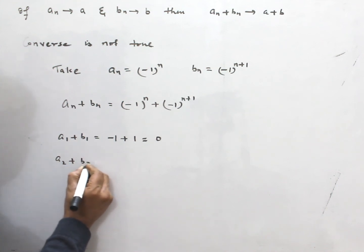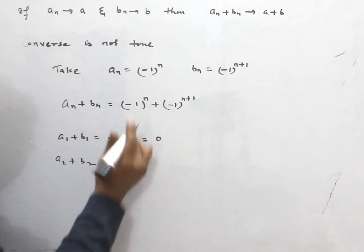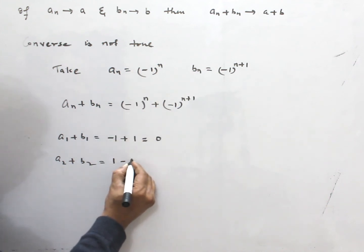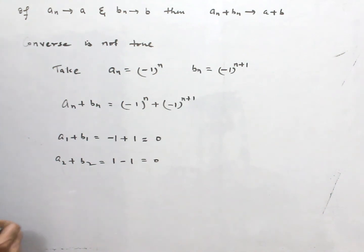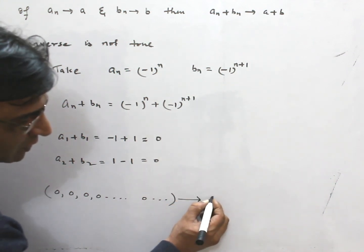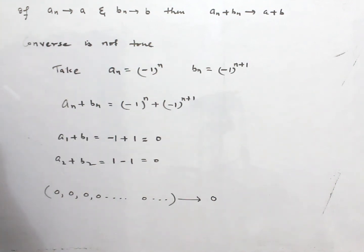Similarly, A2 + B2, again, if I take, this is 1 and this is -1, again 0. Now, in this case, you see, the sequence becomes 0, 0, 0, 0, 0. This is a constant sequence whose all terms are 0. So, this sequence will converge to 0. So, here we have proved that the converse of this result is not true.